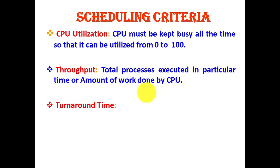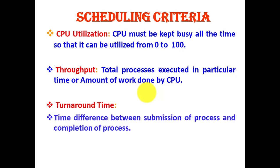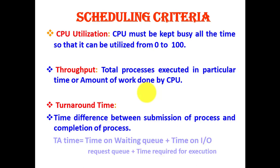The third criteria is turnaround time, which is the time difference between submission of a process and completion of that process. Turnaround time equals time on waiting queue plus time on I/O request queue plus time required for execution — from the moment the process enters the system until the moment it gets its completion.